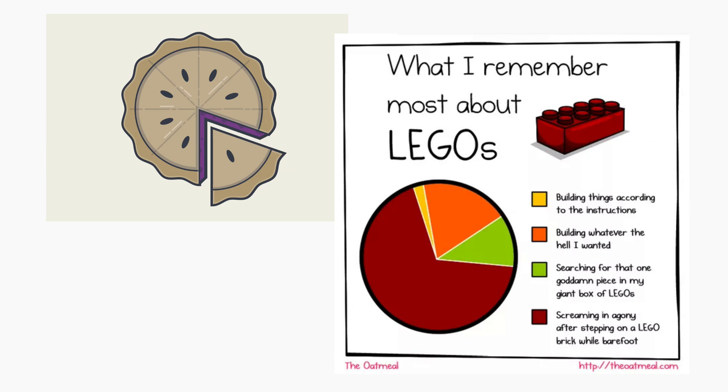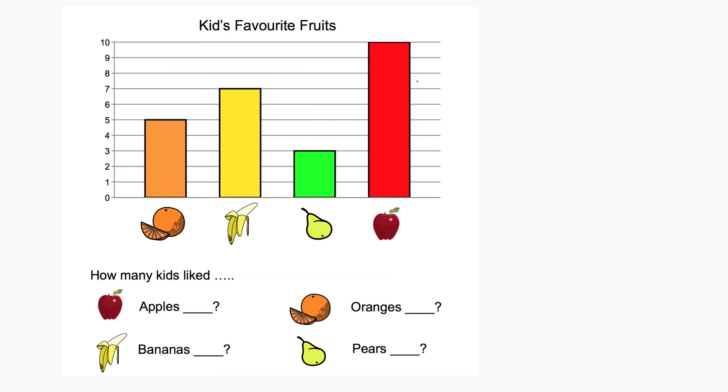The second type is a bar chart. This is good for comparisons. This is the second broad category of questions you would ask, comparisons. So comparisons of items here. How many kids actually liked apples?